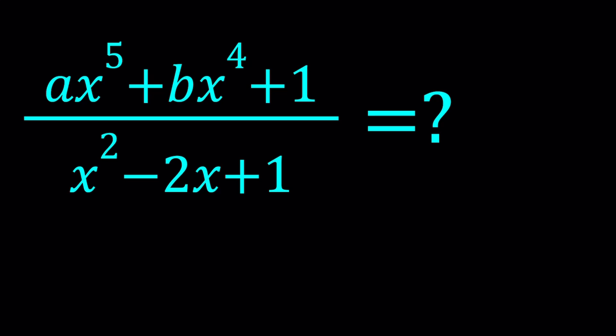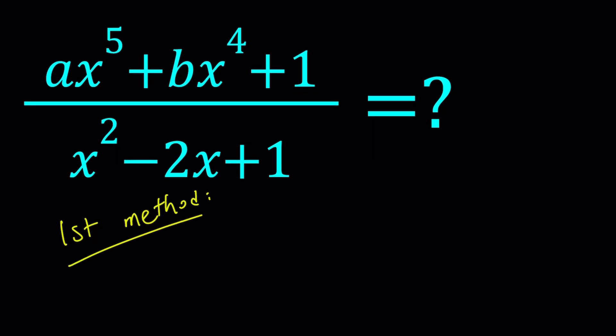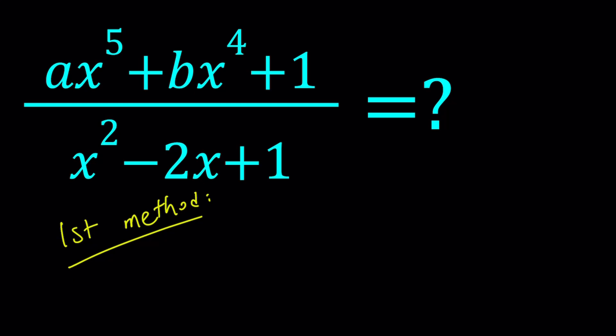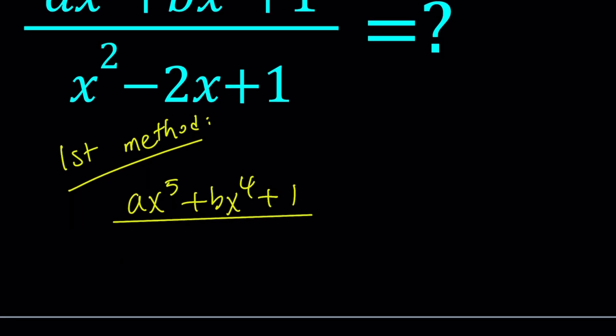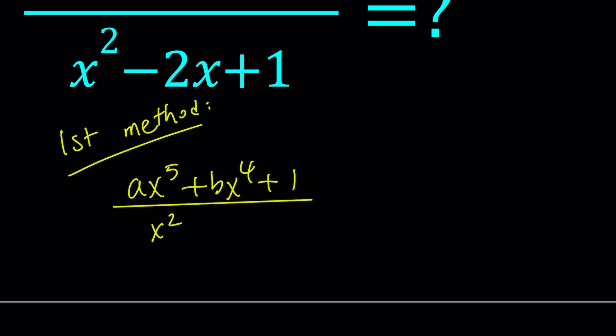So let's start with the first method. For my first method, since this expression is simplifiable, if this can be simplified and reduced, that means we get an answer as a cubic. So I'm thinking, if you're able to divide this by x squared minus 2x plus one, then the answer should look like this.